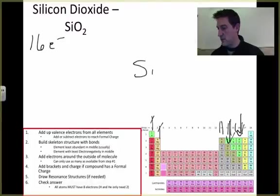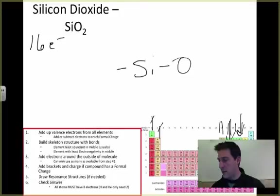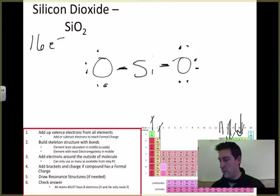Silicon in the middle, oxygens off the side. I've used two, four, five, six, seven, eight, nine, ten, eleven, twelve, thirteen, fourteen, fifteen, sixteen.